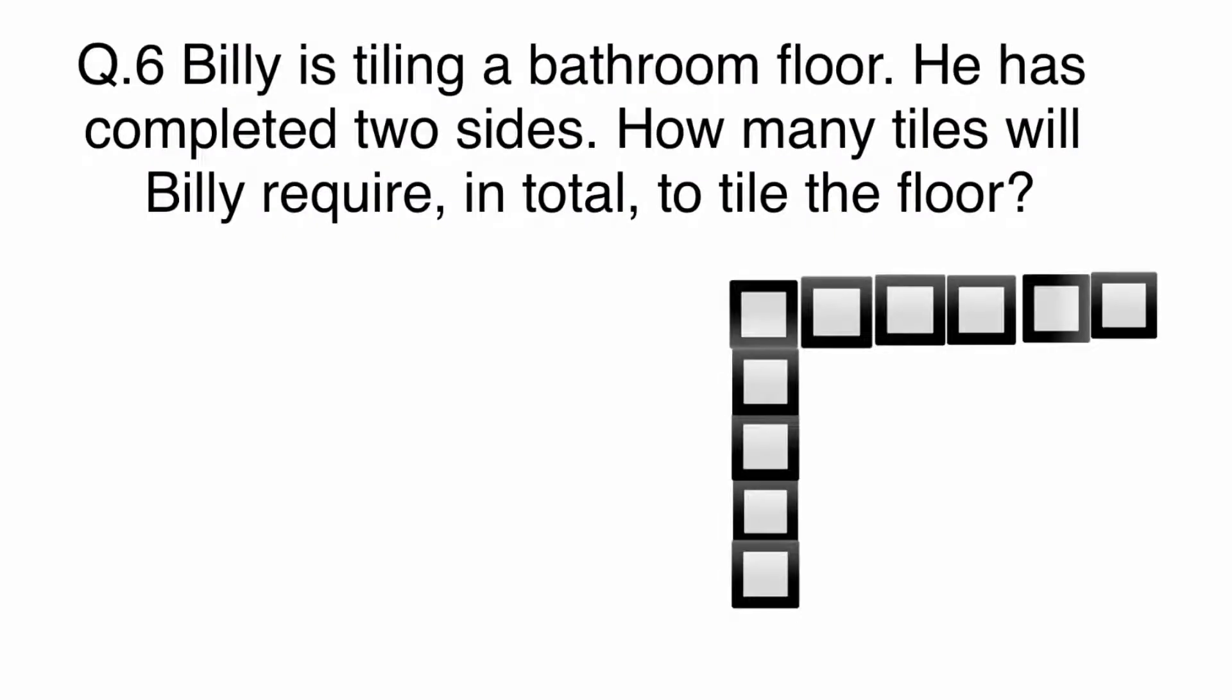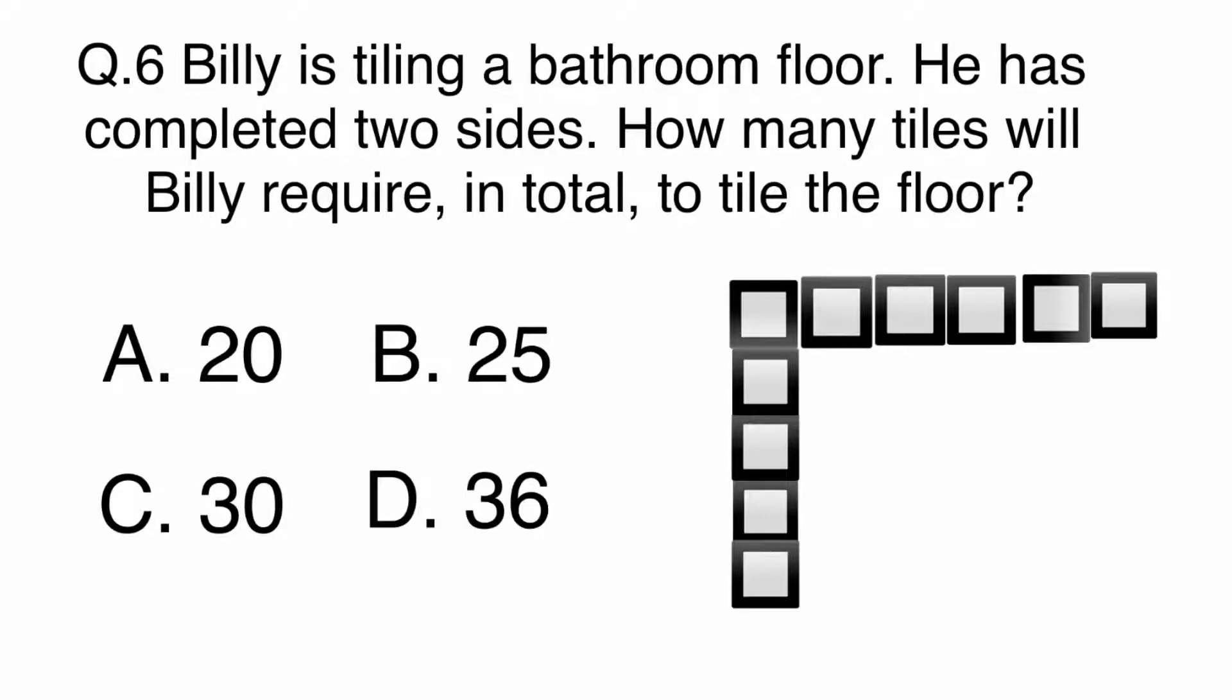Question 6. Billy is tiling a bathroom floor. He has completed two sides. How many tiles will Billy require in total to tile the floor? A. 20, B. 25, C. 30, D. 36.